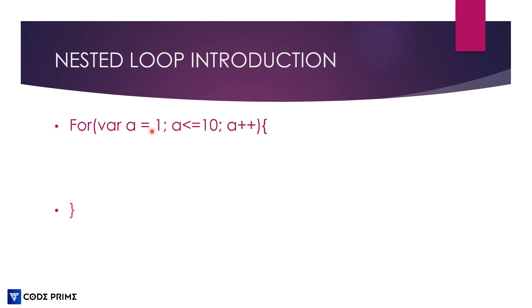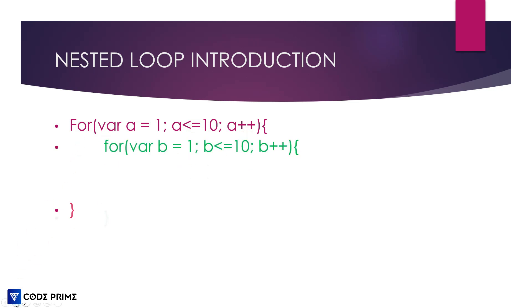Nested loops are basically used with for loops. When you have a simple for loop — this is a basic for loop — with a variable 'a' equal to 1, and a less than or equal to 10, with an increment, it's called a nested loop when inside this for loop you have another for loop.